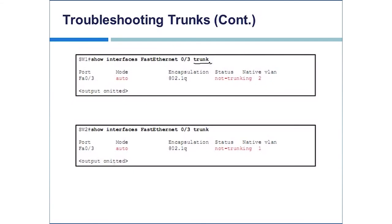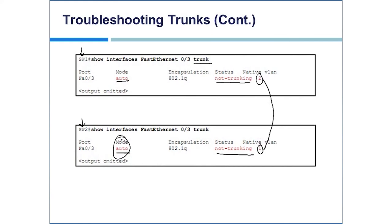Using 'show interface trunk' to see the summary, if both switch one and switch two show mode as 'auto', neither will initiate being a trunk — the status will show 'not trunking'. That can be a problem. You can cover both troubleshooting areas — native VLAN mismatch and mode mismatch — with a single 'show interfaces [interface] trunk' command. Look at your documentation to decide the correct native VLAN and whether to statically make both sides trunks or set at least one to auto desirable.